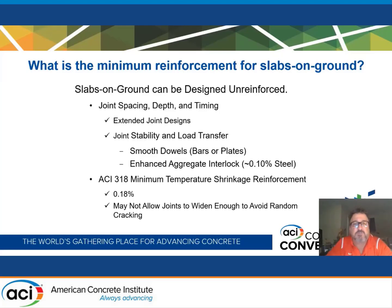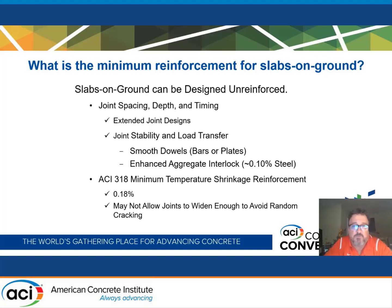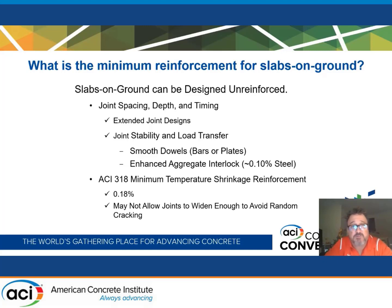You need to include details in those joints to ensure joint stability and load transfer. Some of those details are smooth dowels in joints — these can be bars or plates on baskets. The second detail is enhanced aggregate interlock. Unlike the crack width control conventional reinforcing of half a percent steel or greater, enhanced aggregate interlock is achieved with a tenth of a percent steel. This light amount of steel is transferred through the saw-cut control joints, so the joint activates and widens slightly to accommodate shrinkage without resulting in out-of-joint cracking.